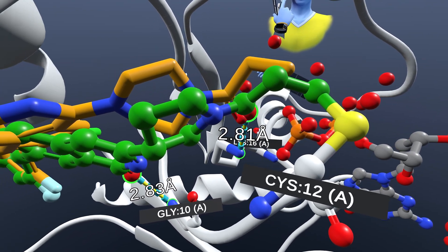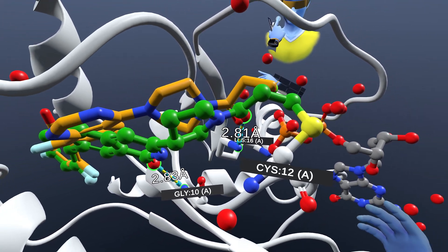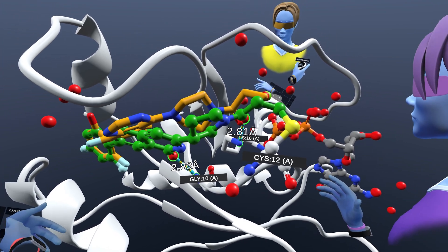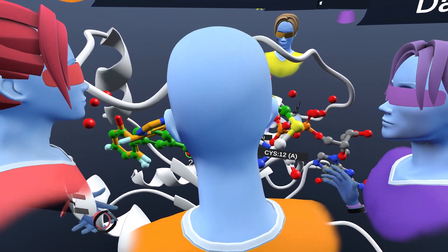So it binds really well only to the mutated KRAS, not the wild type. So that's exactly what we want.